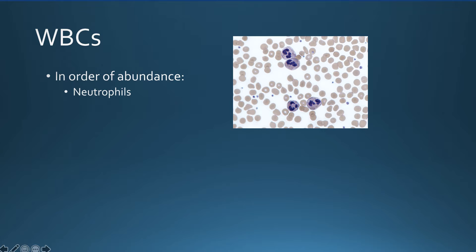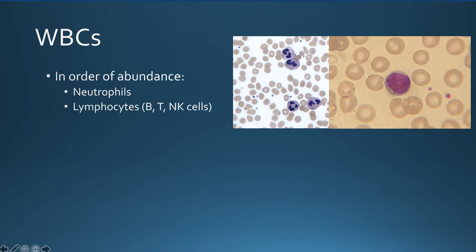Lymphocytes have a large nucleus that fills up almost the entire cell and are mainly involved in the body's adaptive immune responses to specific pathogens. They are the B cells, T cells, and natural killer cells. You do not have to be able to distinguish between these three subtypes.